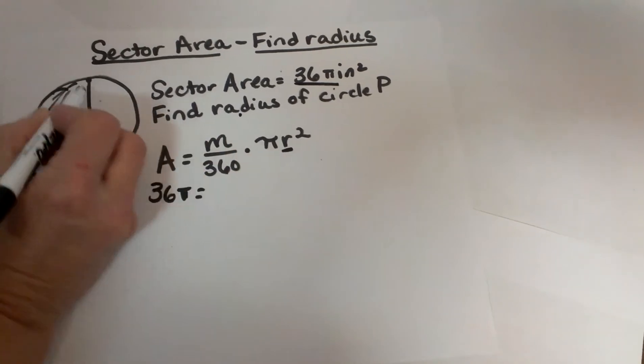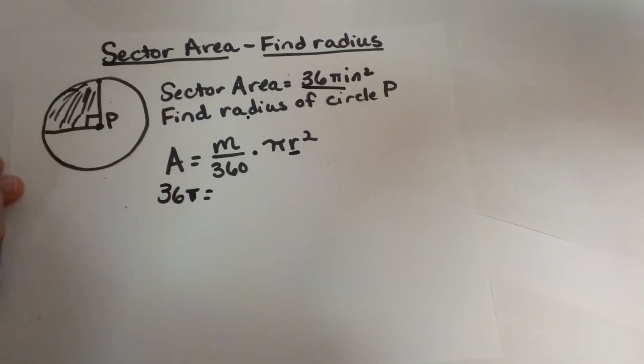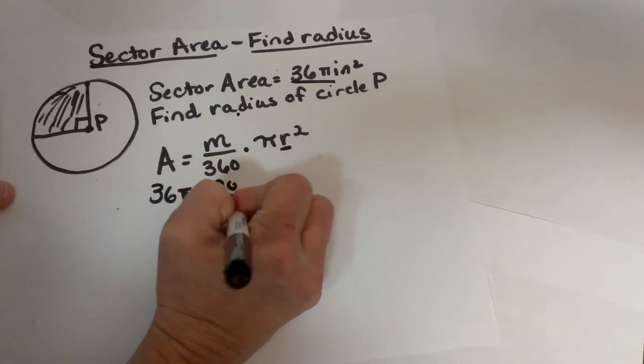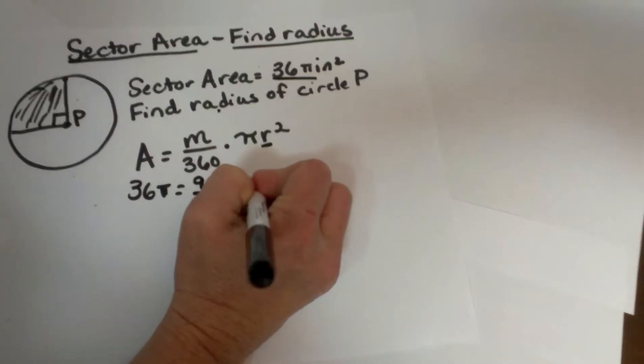Now the measure of the angle. Let's look at the angle that is part of the section and that is 90 degrees, that is a right angle. So that is 90 over 360 and then times πr².